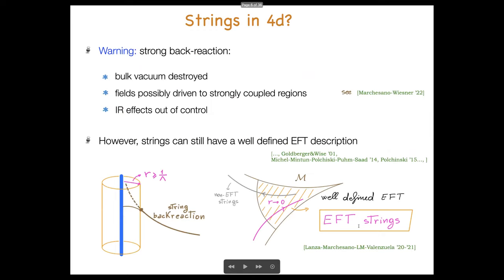I would like to emphasize that strings in four dimensions are qualitatively and also quantitatively quite different from strings in higher dimensions. Basically because they are codimension two, and then they cannot be treated as probes of a given vacuum for the background theory. They will generically destroy the asymptotic vacuum structure, and will typically force the surrounding scalars to flow — in particular, they can flow away from these asymptotic weakly coupled regions.